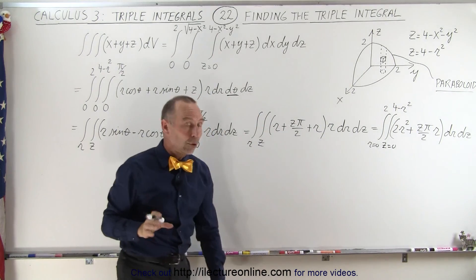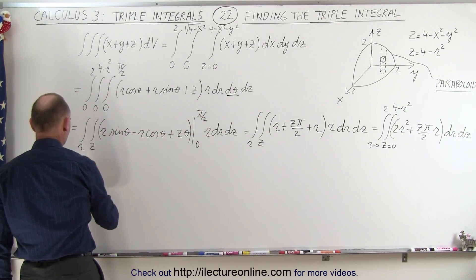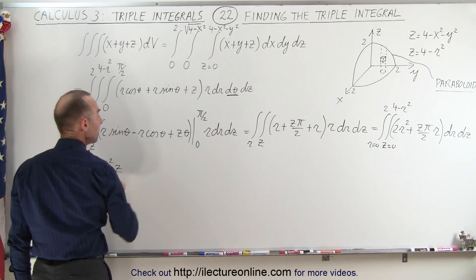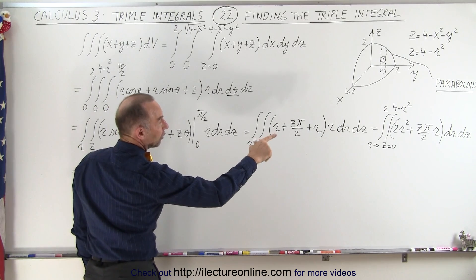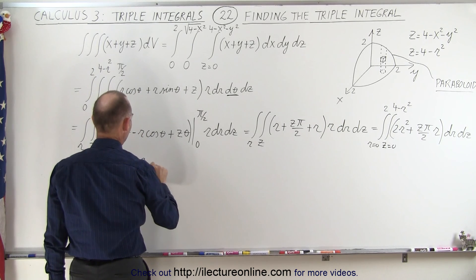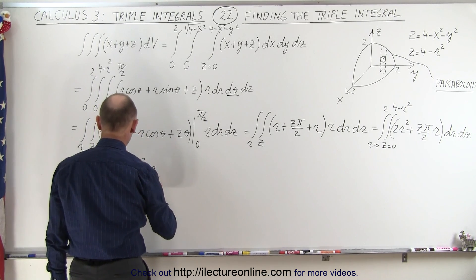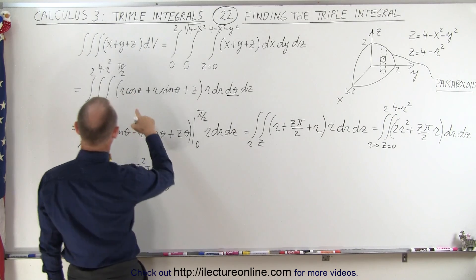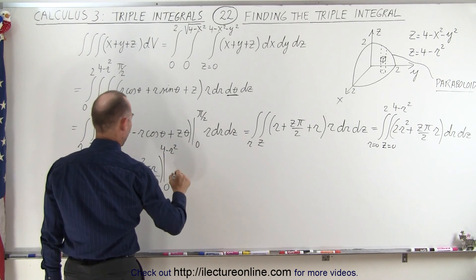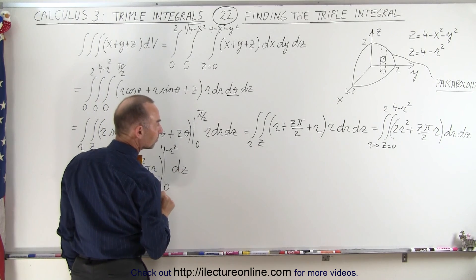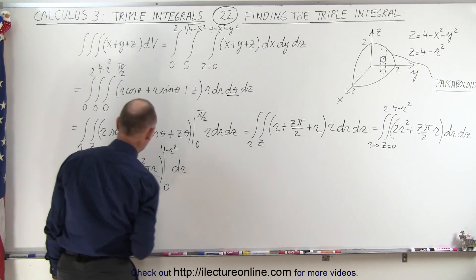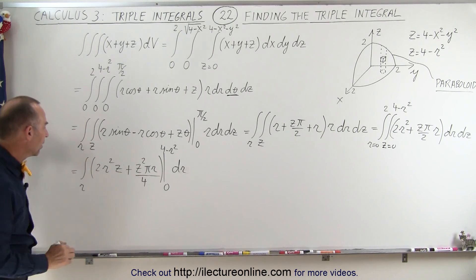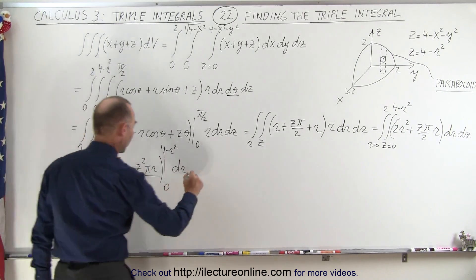Now integrating over z: integrating 2r squared gives 2r squared times z, and integrating z times pi times r over 2 gives z squared times pi times r over 4. This is evaluated from z equals 0 to z equals 4 minus r squared, with a dr remaining for the final integral over r.